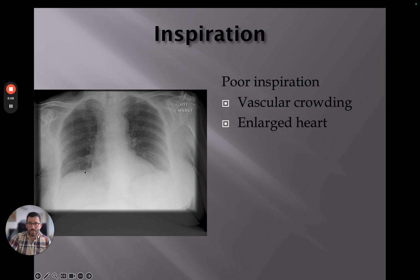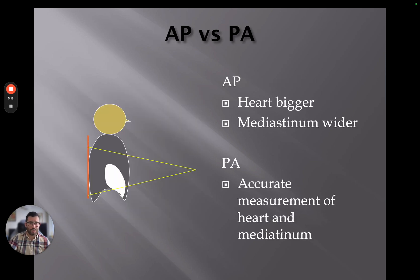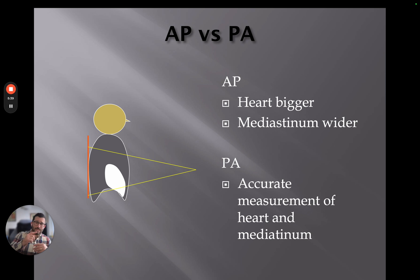To summarize inspiration effects: poor inspiration causes vascular crowding and a slightly enlarged-appearing heart — ignore this on an AP projection. Now, AP versus PA — what does that mean for our x-ray image? We're looking at a three-dimensional structure on a two-dimensional image. Here we have a graphical representation of a patient, an x-ray detector, and the x-ray tube. X-rays leave the tube as divergent rays — they don't travel in straight lines.